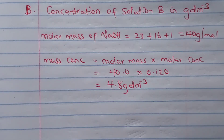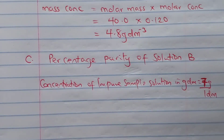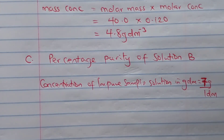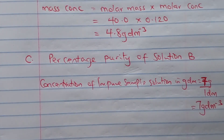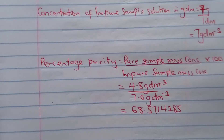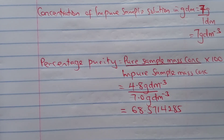We still need to get the concentration of the impure solution in grams per dm³ to calculate percentage purity. The total given is 7 grams of impure sodium hydroxide in 1 dm³, giving 7 grams per dm³. Percentage purity = (pure sample mass concentration / impure sample mass concentration) × 100. Inserting the values and leaving to 3 significant figures gives us the percentage purity answer for part C.